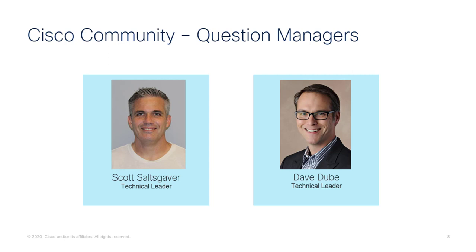Finally, we have Dave, a technical leader and product owner in the Cisco customer experience organization. He currently works on defining product requirements for multiple customer and partner-facing platforms and web applications. He has been at Cisco for over two decades, working in areas from routing portfolio to product management with the Cisco CX organization. He holds degrees in electrical engineering from Virginia Tech, a master's degree in electrical engineering from North Carolina State University, and an MBA from the University of Virginia.